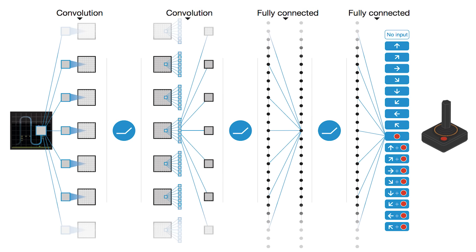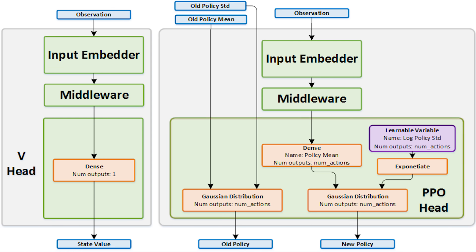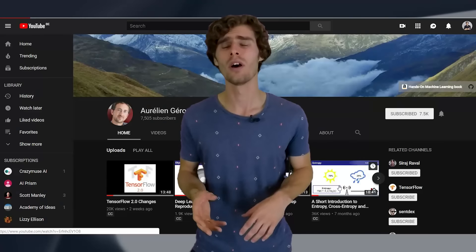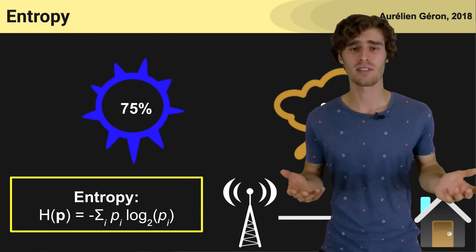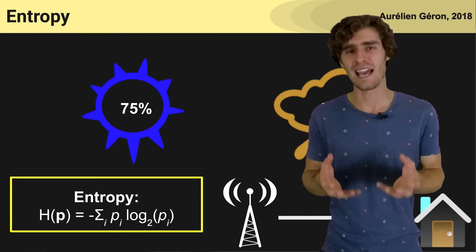The second part of the advantage function is the baseline or the value function. What the value function tries to do is give an estimate of the discounted sum of rewards from this point onward — basically trying to guess what the final return is going to be in this episode, starting from the current state. During training, this neural net representing the value function is frequently updated using the experience the agent collects, because this is essentially a supervised learning problem: taking states as input and predicting the discounted sum of rewards from that state onwards. Because this value estimate is the output of a neural net, it will be a noisy estimate with some variance, since the network won't always predict the exact value of a given state.